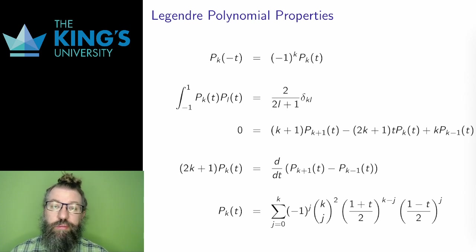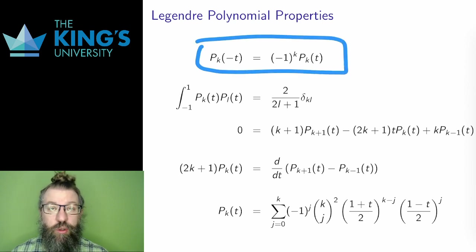This is not strictly for the course, but just for interest. First, the odd number Legendre polynomials are odd functions, and the even number ones are even functions. The first line here expresses this.